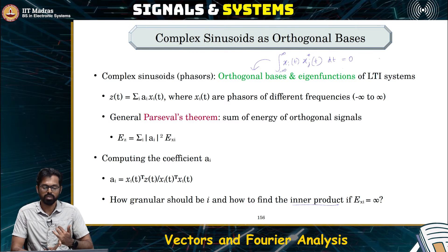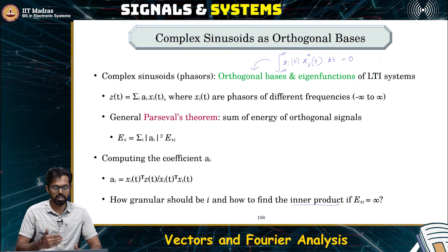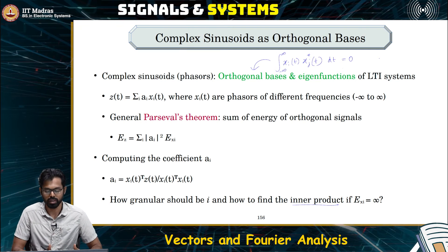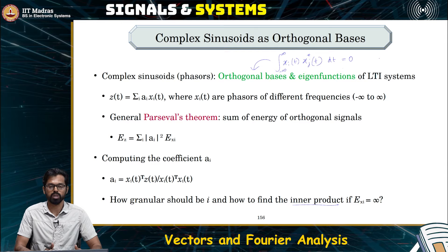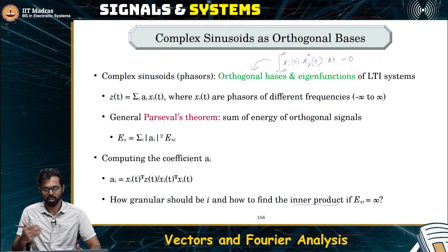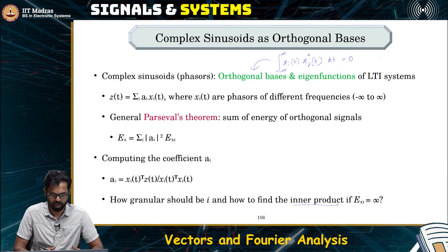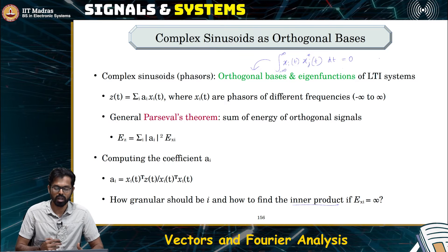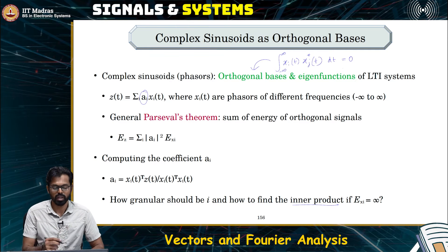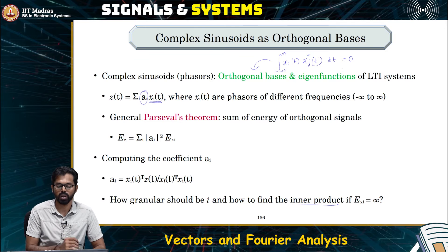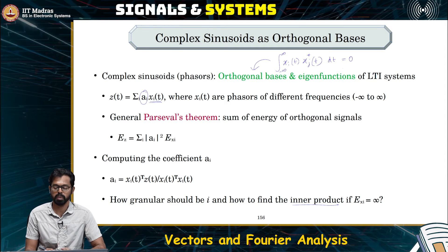Now we have a notion of how to compute the inner product — the projection of one signal onto another. When you project one signal onto the other and get 0, they are orthogonal. This gives us a good head start on how to compute the coefficients. We also have orthogonal phasors which we can use as the basis functions.